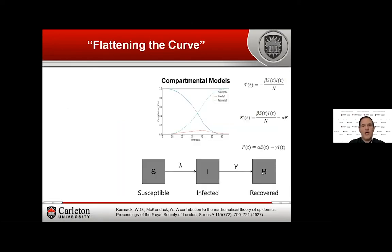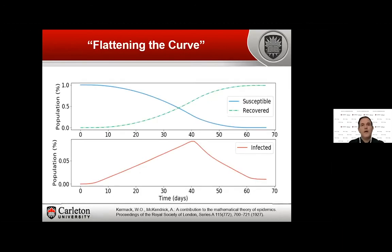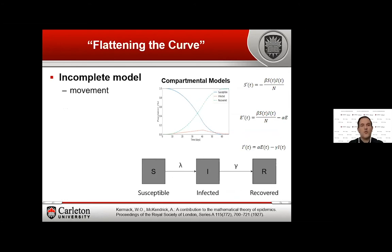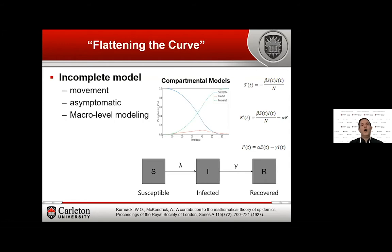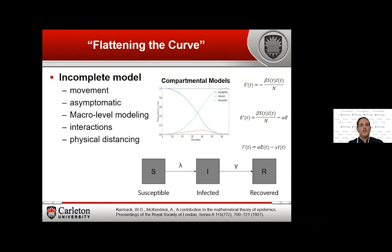We get this compartmental model, write the equations, and solve them — this is completely doable and easy. But this model is incomplete. It represents three things: how people get infected and how they recover. It doesn't have movement of people. It doesn't consider asymptomatic cases, as in the current pandemic. It's macro-level modeling — it models a large population. It's good to begin with, but there are no individual interactions. We cannot model people who disobey physical distancing or choose not to wear masks.